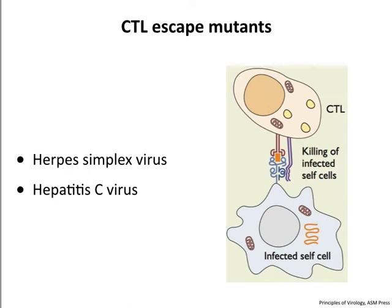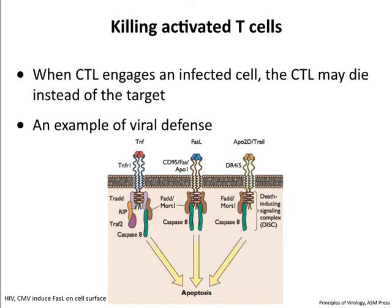CMV has a gene that stimulates removal of MHC from the ER and puts it into the proteasome for degradation. A lot of herpes viruses do this—CMV, HSV, and also HIV. We can also have evasion at the level of peptide display: as infection proceeds, the virus can evolve to change the displayed peptide so infected cells are no longer recognized by CTLs. These CTL escape mutants occur for herpes simplex as well as hepatitis C virus.